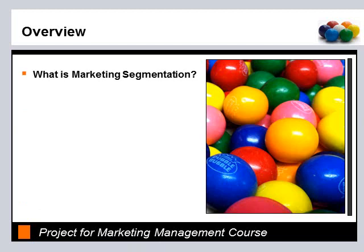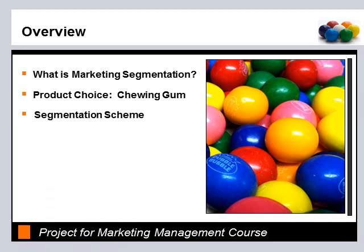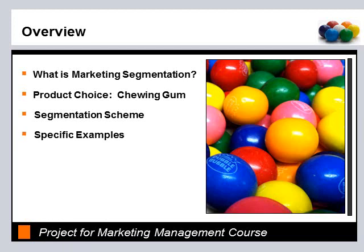To give you an idea of the content: first, we'll cover what is marketing segmentation. Second, we'll cover the product choice, which is chewing gum. Third, I will review a segmentation scheme. Fourth, I'd like to show you some specific examples of the segmentation scheme — the fun part where you see actual examples of each segment. And last, we'll end with a brief summary.